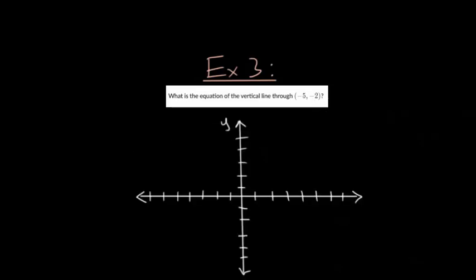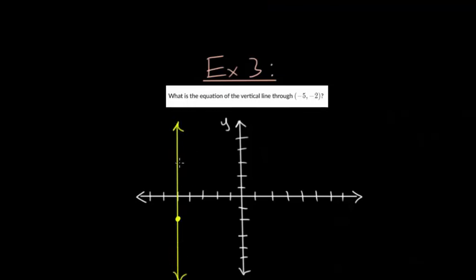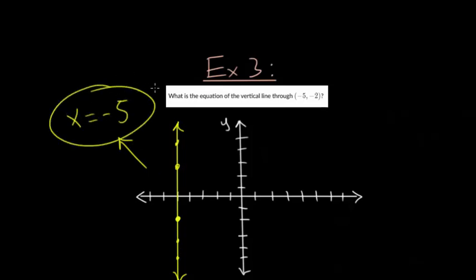Now we have a vertical line through the point negative five comma negative two. To answer this, it helps to plot the point on a coordinate plane. Going five to the left on the x-axis and then down two gives us our point. We draw a vertical line through it. The key feature is that every point on this line has the same x value of negative five, so the equation of the line is simply x equals negative five.